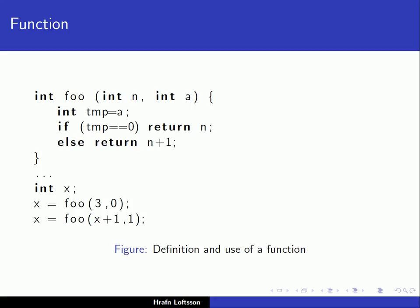It is important to understand that subprograms have three ways of communicating with the outside world: using the parameters of the function, using a return value, and using the non-local environment.